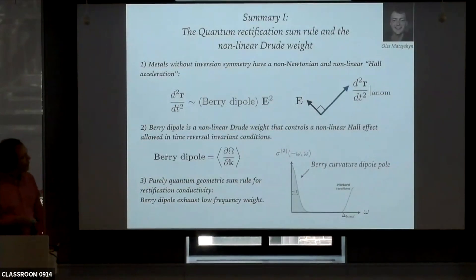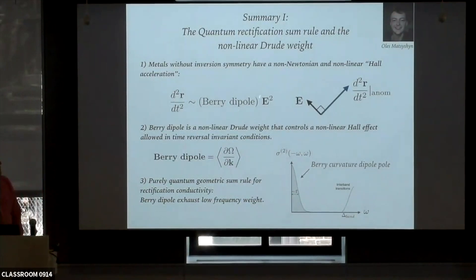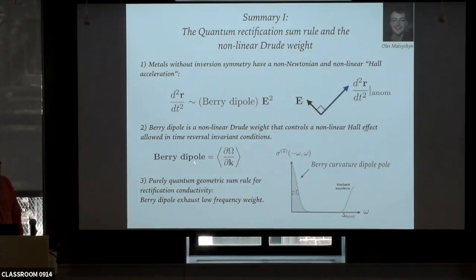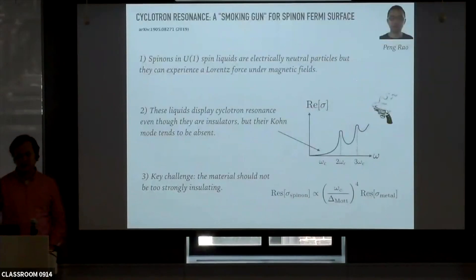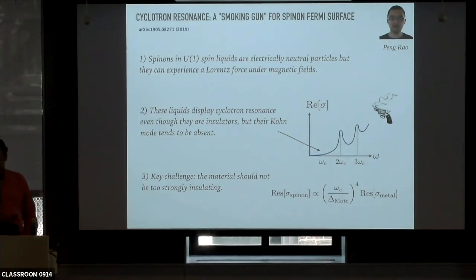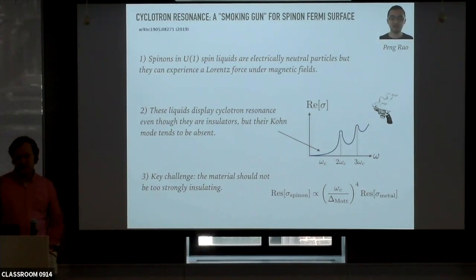That's basically the summary of the first part. Metals without inversion symmetry have an anomalous acceleration controlled by the Berry curvature dipole, which is an average of the gradient of the Berry curvature over momentum space. This gives rise to the nonlinear Hall effect allowed in time-reversal invariant materials. And there is a remarkable sum rule for the rectification conductivity that characterizes rectification from linearly polarized light in time-reversal invariant materials.